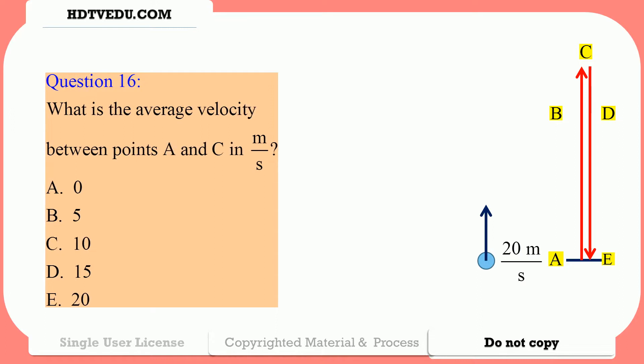Question number 16: What is the average velocity between points A and C in meters per second? 0, 5, 10, 15, or 20? Question number 17: What is the average velocity between points A and D in meters per second? 0, 5, 10, 15, or 20? Question number 18: What is the average velocity between points A and E in meters per second? 0, 5, 10, 15, or 20?